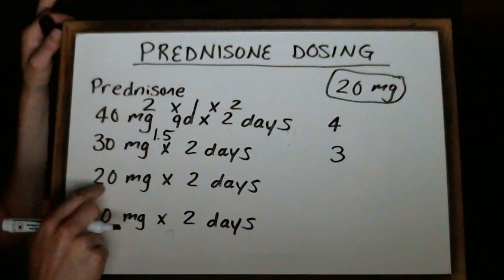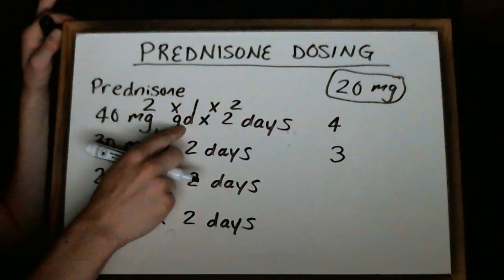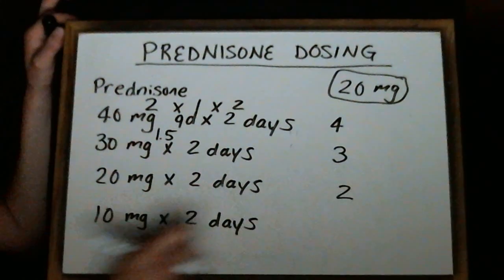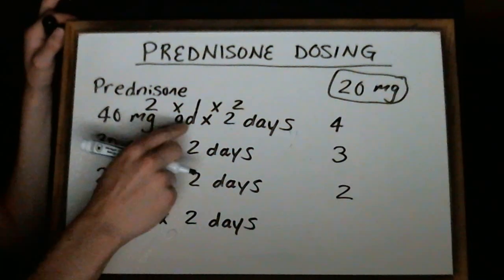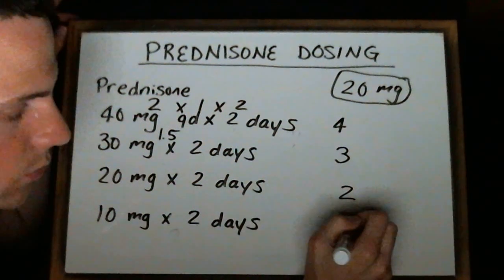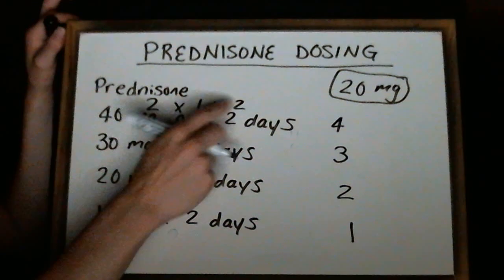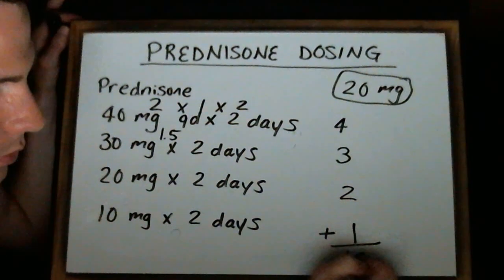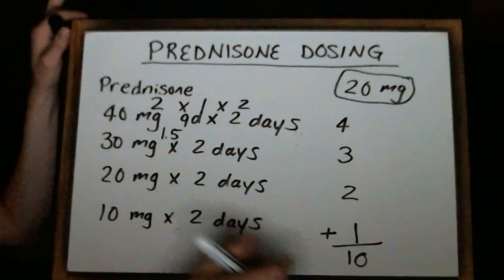For the third line, we take 20 divided by 20, so we get 1 tablet, times 1 for once a day, for 2 days — so 2 tablets. And then for the last line, 10 divided by 20 gives us one half tablet, once a day for 2 days, so that's 1 tablet. Adding all lines together, we get 10 tablets total using the 20 milligram strength.